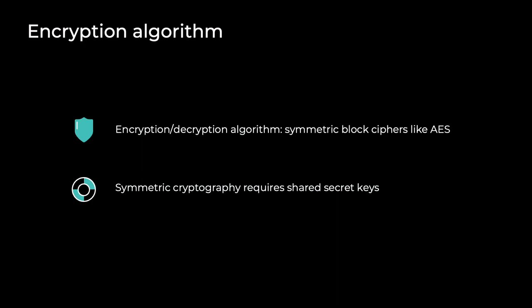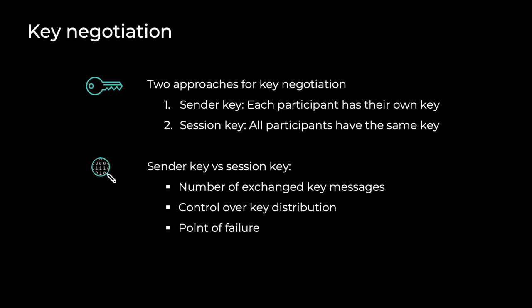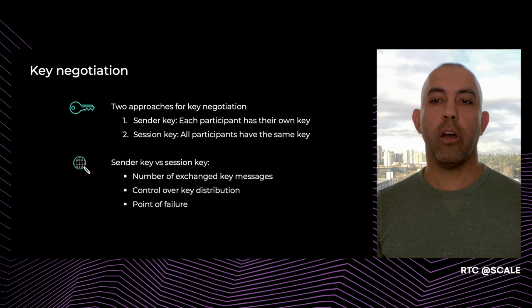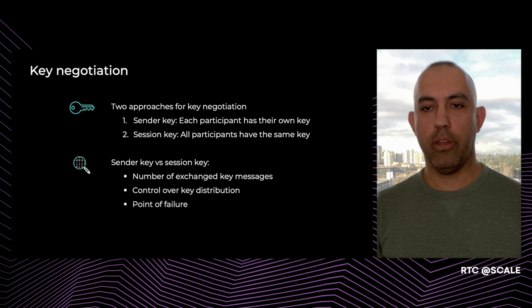S-Frame can use a symmetric block cipher like AES for encryption and decryption. This type of cryptography requires shared secret keys between the sender and receiver. There are two main approaches for key negotiation. One is the sender key, where each participant generates their own key and sends it to everyone else in the call. The second approach is the session key, where one key is generated in the call and shared among all participants. Sender and session keys each have their pros and cons. For example, sender keys require a larger number of key messages exchanged compared to session keys. On the other hand, sender keys give more control to the clients over who they share their sender key with.